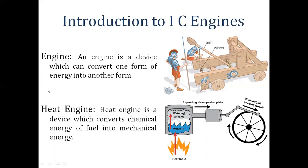Next is the heat engine. A heat engine is a device which converts the chemical energy of fuel into mechanical energy. As you can see in the example, here there is combustion — heat is released from combustion. We use that heat to produce steam, and the steam enters a piston cylinder, producing reciprocating motion. After that, a linkage converts the reciprocating motion into rotary motion. Ultimately, chemical energy is converted to mechanical energy.